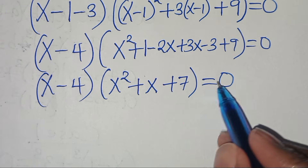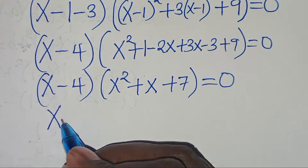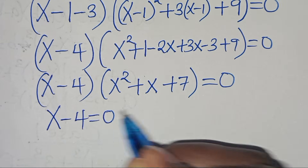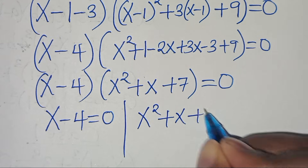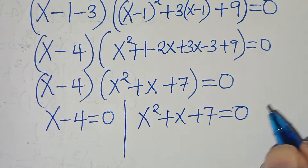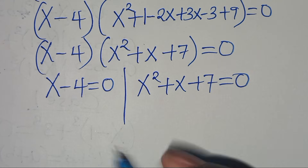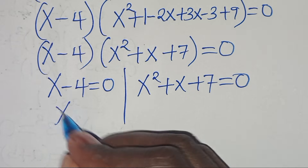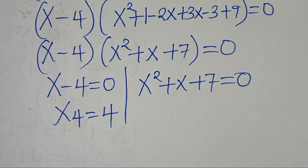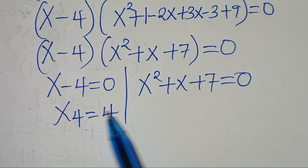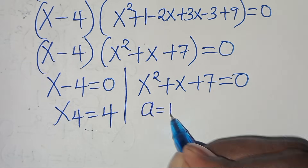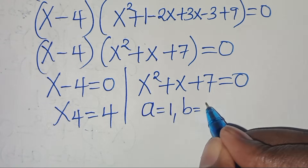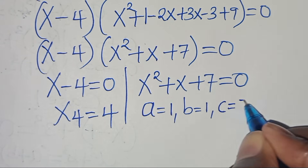We have two parts: x minus 4 equals 0, and x^2 plus x plus 7 equals 0. From the first part, x4 equals 4 — this is the second real solution. For the quadratic, a equals 1, b equals 1, and c equals 7.